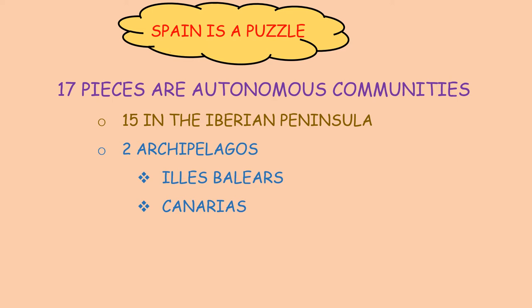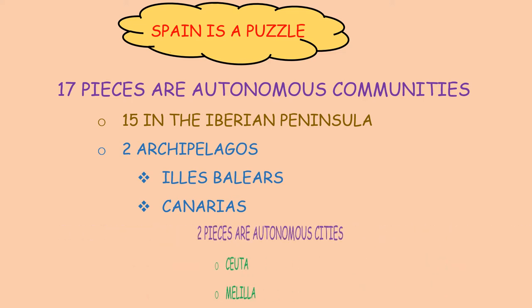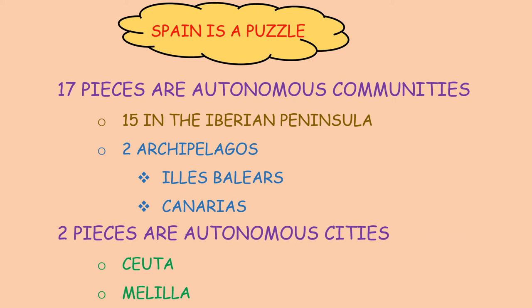15 are in the Iberian Peninsula and 2 are archipelagos: Illes Balears and Canarias. And 2 pieces are autonomous cities, Ceuta and Melilla.